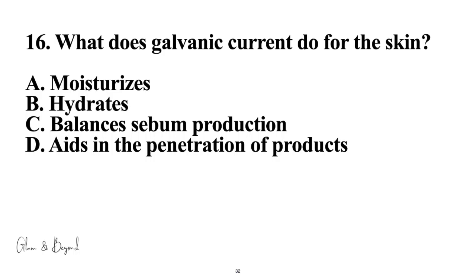Number sixteen: what does galvanic current do for the skin? A, moisturizes; B, hydrates; C, balances sebum production; D, aids in the penetration of products. The answer is D, aids in the penetration of products.